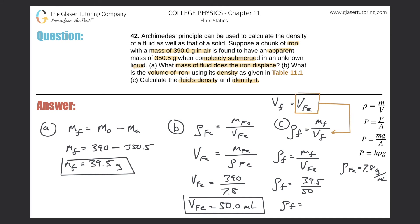So the density of the fluid is going to be the mass, 39.5 from part A, divided by the volume, 50. And the density now, just be careful with your units. The density of the fluid is going to be 39.5 divided by 50, so 0.79 grams per milliliter.